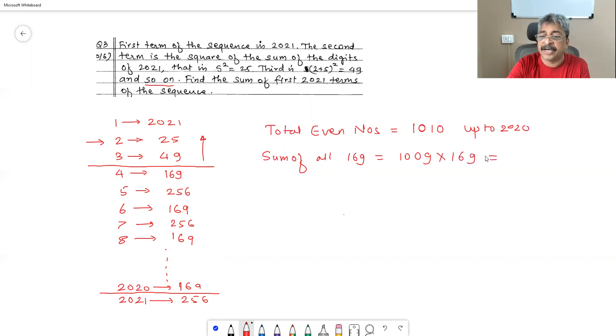Sum of all 256. Now, up to 2020, there are 1010 odd numbers, correct? Out of the odd numbers, you remove these two. So you end up getting 1008 odd numbers. And you add the last one. Therefore, again, 1009 instances of 256 will be there, which will add up to 1009 times 256. This is another summation that we have to do.